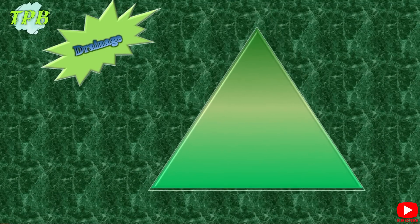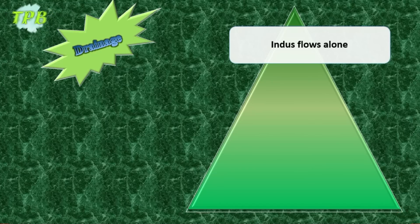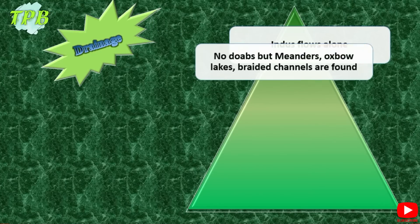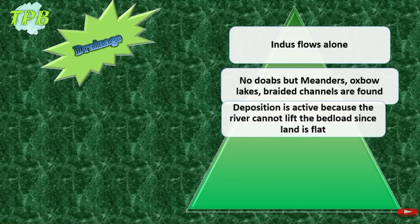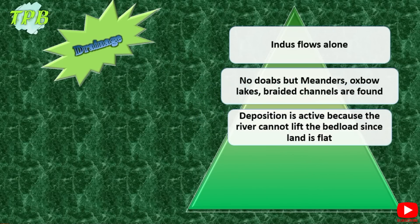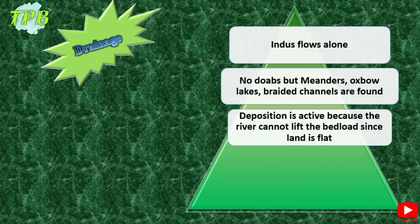However, the drainage is a little different — Indus flows alone here, unlike the Upper Indus Plain. There are no doabs, because for doabs you need two or more rivers. Meanders, oxbow lakes, and braided channels are common. Deposition in the Lower Indus Plain is very active, but erosion is very minimal — almost non-existent. The reason is that the river has a very slow gradient, flows in its lower course carrying a lot of bed load, and the land is extremely flat — so deposition becomes active and erosion is minimal.